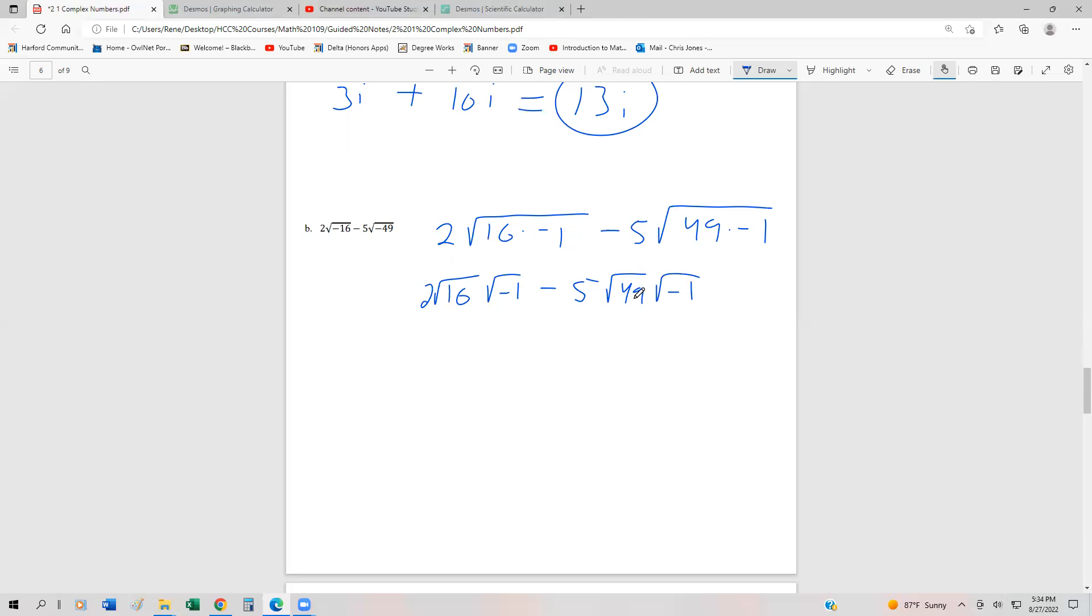We know root of 16 is going to be four. So we get two times four times i minus five times seven times i. So again, that's going to be our negative 1. That's going to be our 7. That's going to be our i, and that's going to be our 16.